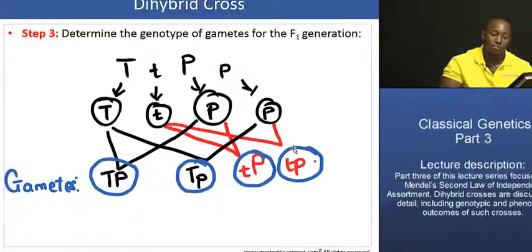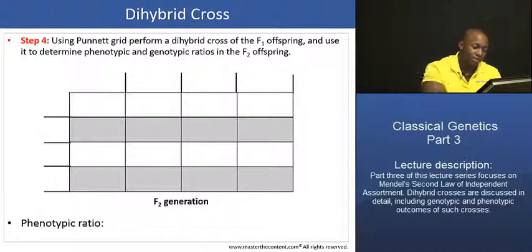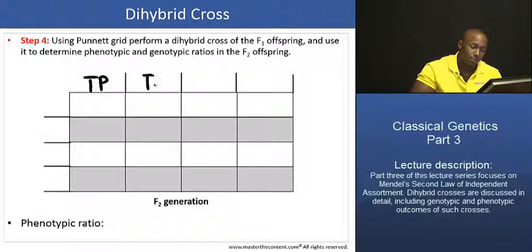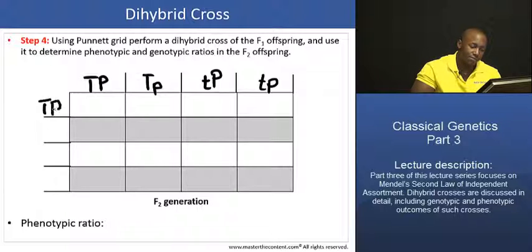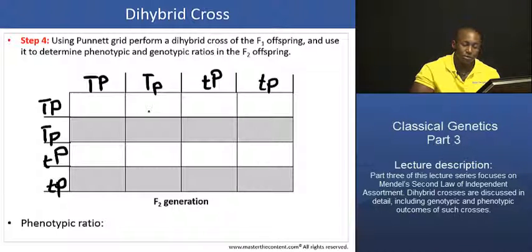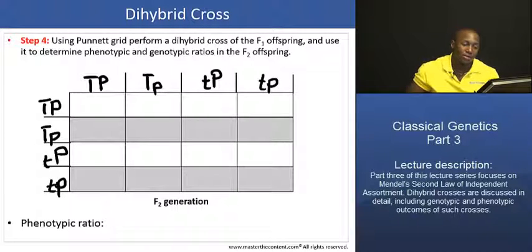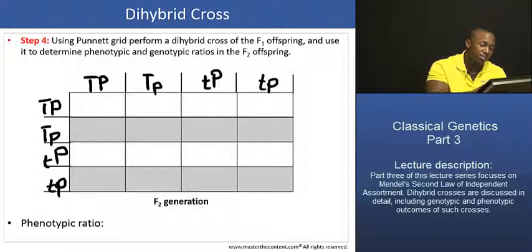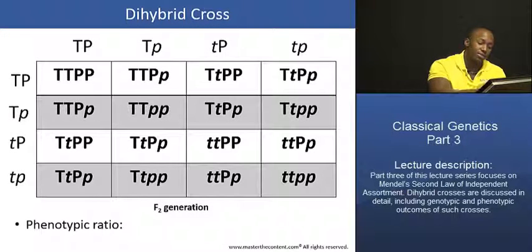All you have to do from this point onwards is take all of those gamete possibilities and put them in a Punnett grid, like so. One side of the grid represents the male, or the father, and the opposite side represents the female, or the mother. You're going to cross all those genotypes in this Punnett grid to get all the possible allele combinations we would see in the F2 generation — the second filial generation — and that gives you something that looks like this.